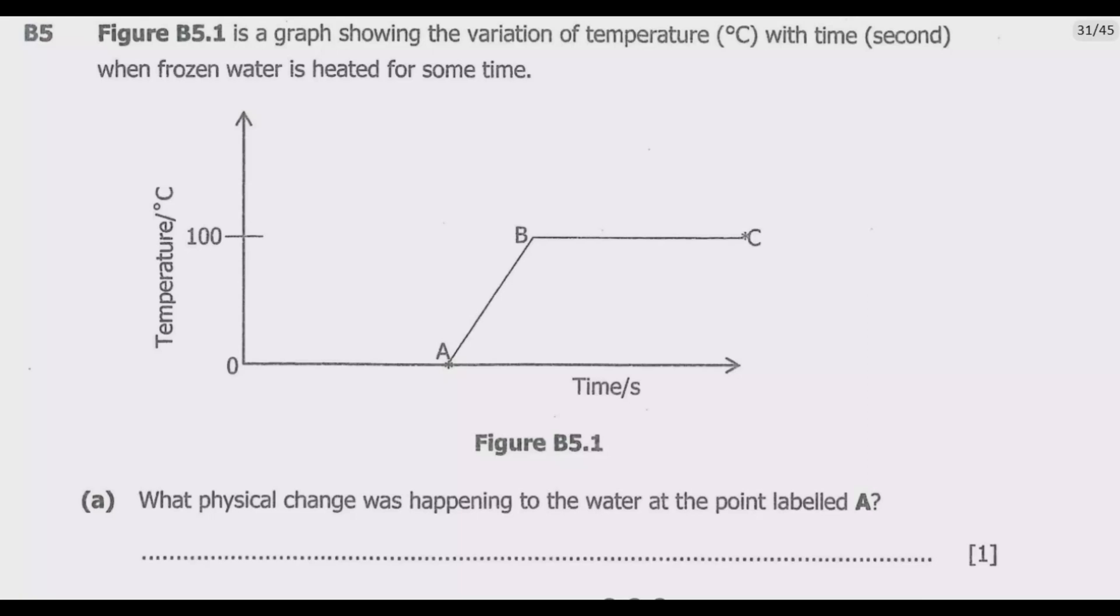So question B5, Figure B5.1 is a graph showing the variation of temperature in degrees Celsius with time in seconds when frozen water is heated for some time. We have that figure, then what physical change was happening to the water at the point labeled A? So we are at point A. What you notice is we have 100 degrees Celsius as temperature which is the boiling point of water.